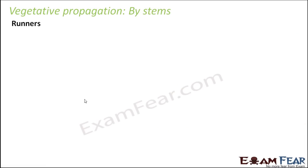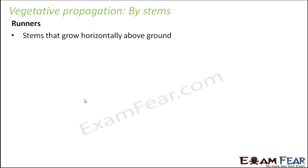By stems: there are many modifications of the stem which help in vegetative propagation. One such modification is called a runner. Runners are stems that grow horizontally above the ground. Normally stems grow vertically upwards, but there are some stems which grow horizontally, almost parallel to the ground, though above it.